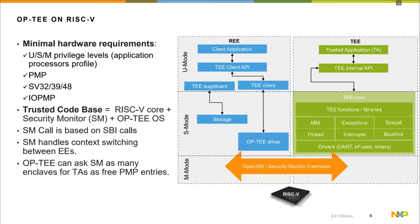In this context, we ported OP-TEE to RISC-V. To run OP-TEE, the minimum hardware requirements are: first, three privileged levels — a user mode to run the trusted application, supervisor mode to run the OP-TEE OS, and machine mode to run a security monitor. We also need PMP (Physical Memory Protection) to implement memory isolation for TEE, an MMU for virtual address space isolation between trusted applications, and IOPMP to enforce isolation of device memory mapping space, such as cryptographic accelerators.